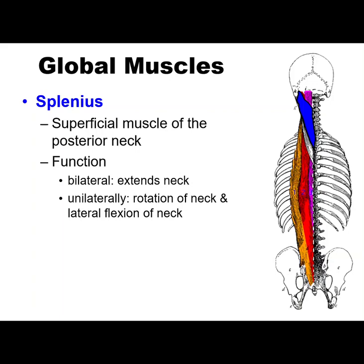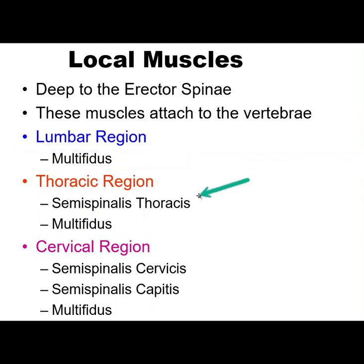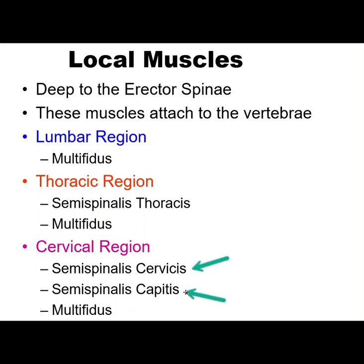Now let's look at the local muscles. These attach vertebra to vertebra. In the lumbar region, you have the multifidus. In the thoracic region, you have the semispinalis thoracis and the multifidus. The multifidus goes all the way from the lumbar to the cervical region, where we see the multifidus again, along with semispinalis cervicis and semispinalis capitis, which we saw in a previous video. Remember: iliocostalis, longissimus, and spinalis are global; when we go to semispinalis, we're going deeper and only attaching vertebra to vertebra.